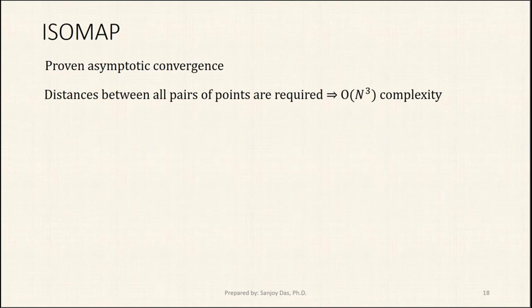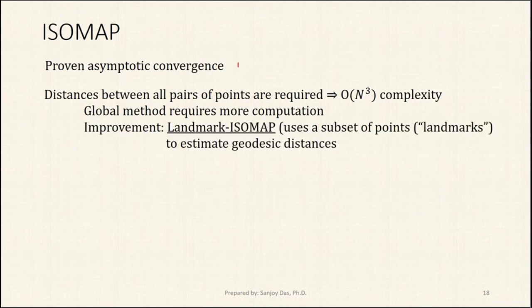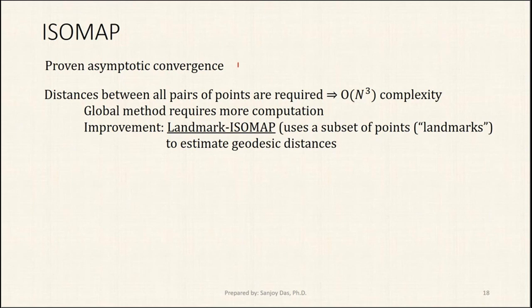Isomap has proven asymptotic convergence. However, it requires distances between all pairs of points, giving O(n³) complexity where n is the number of samples. Because of this, people have proposed Landmark Isomap as an improvement. It takes a small subset of points to estimate geodesic distances and uses the Nyström approximation to find all pairwise distances before applying MDS, greatly simplifying the computation.